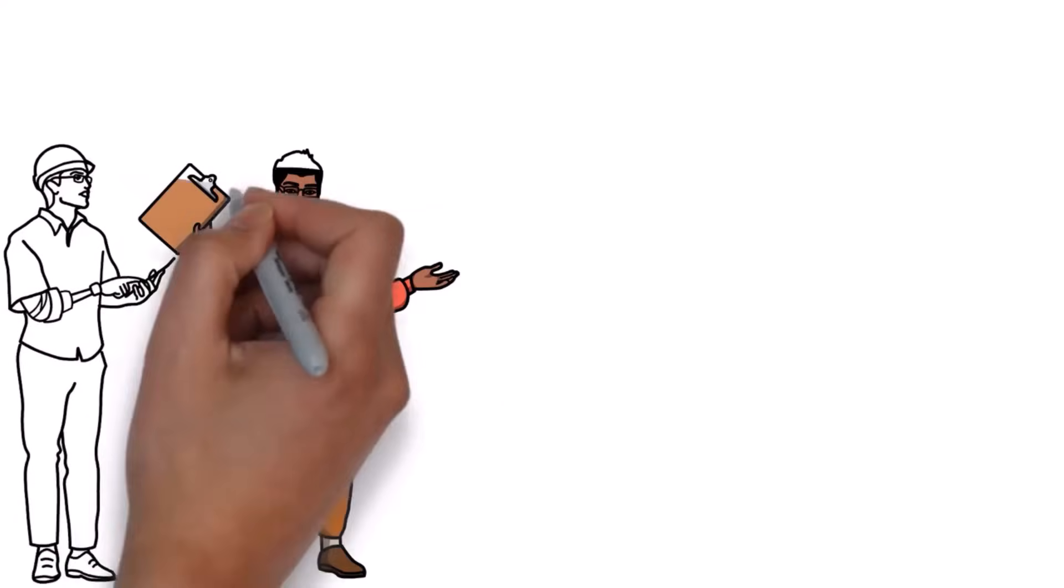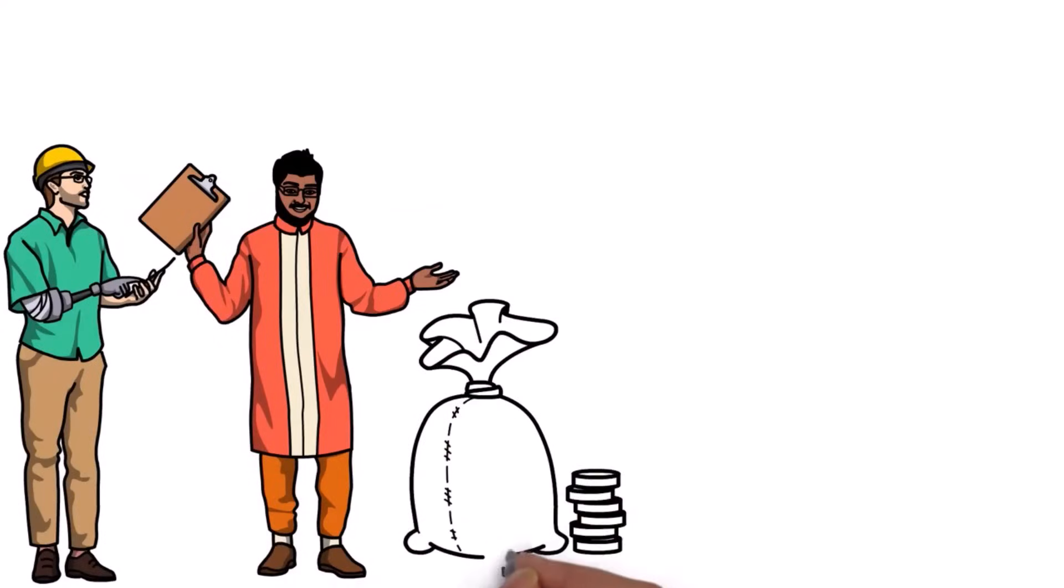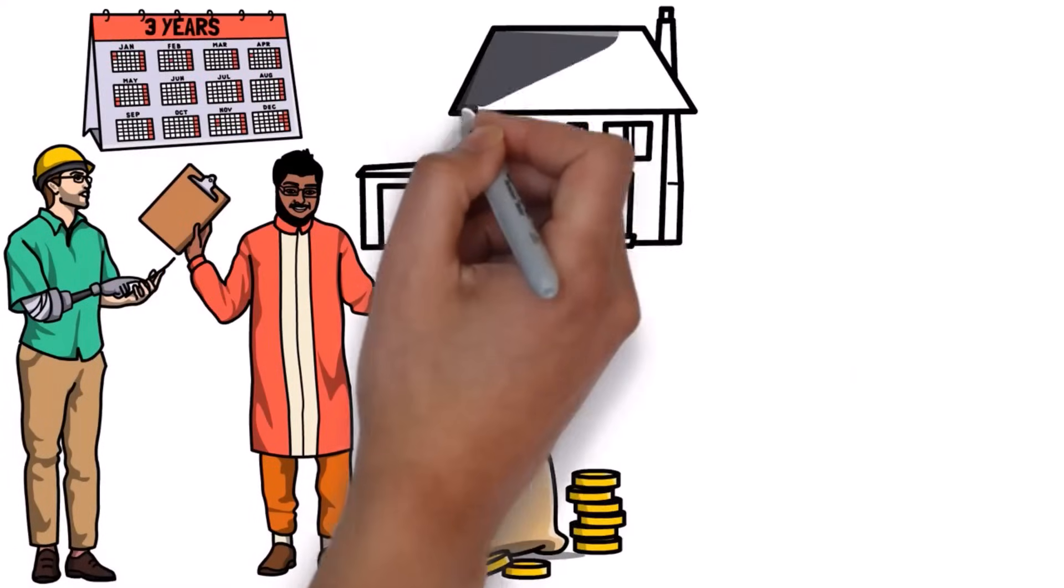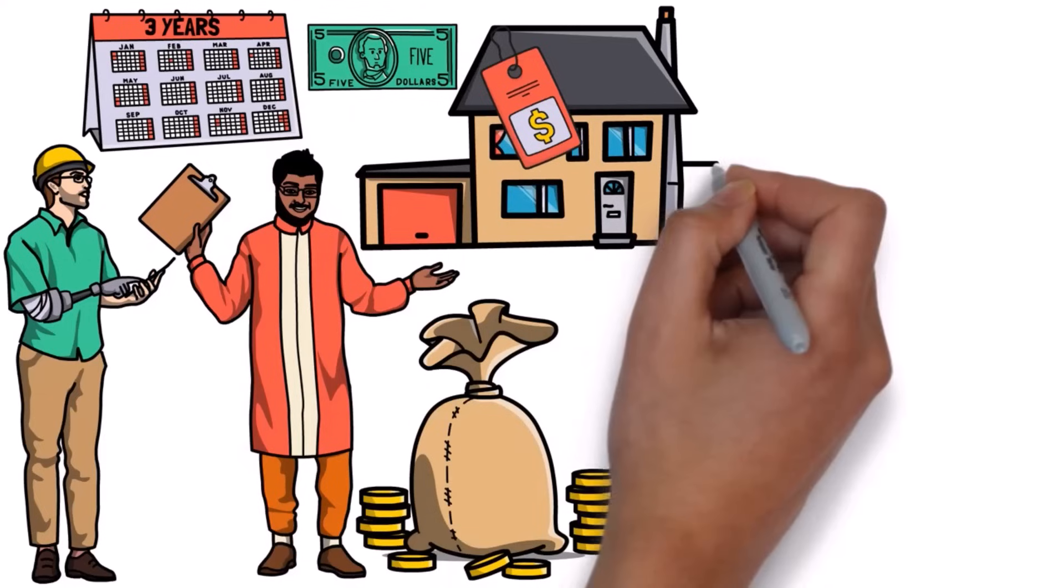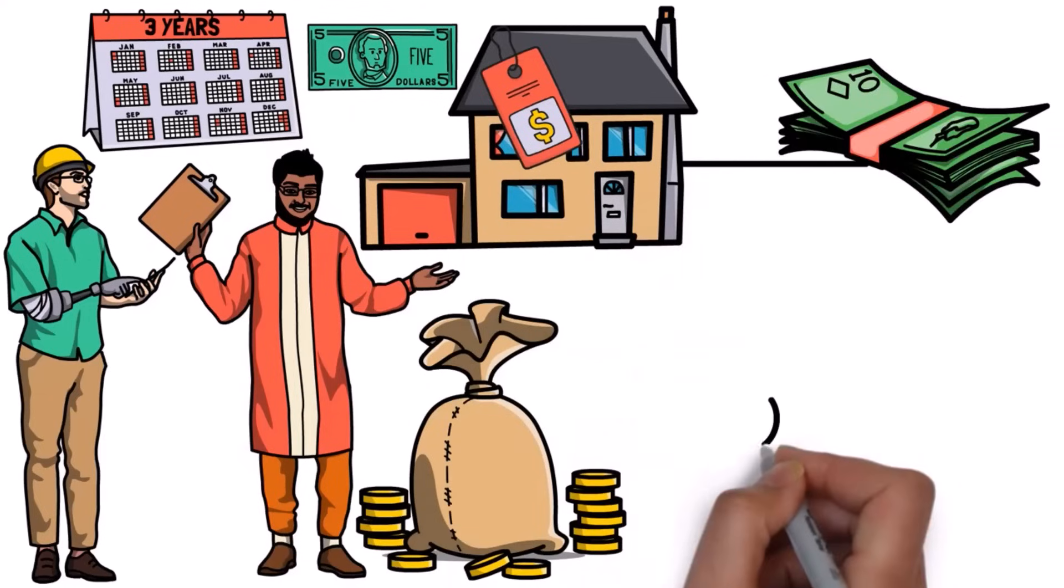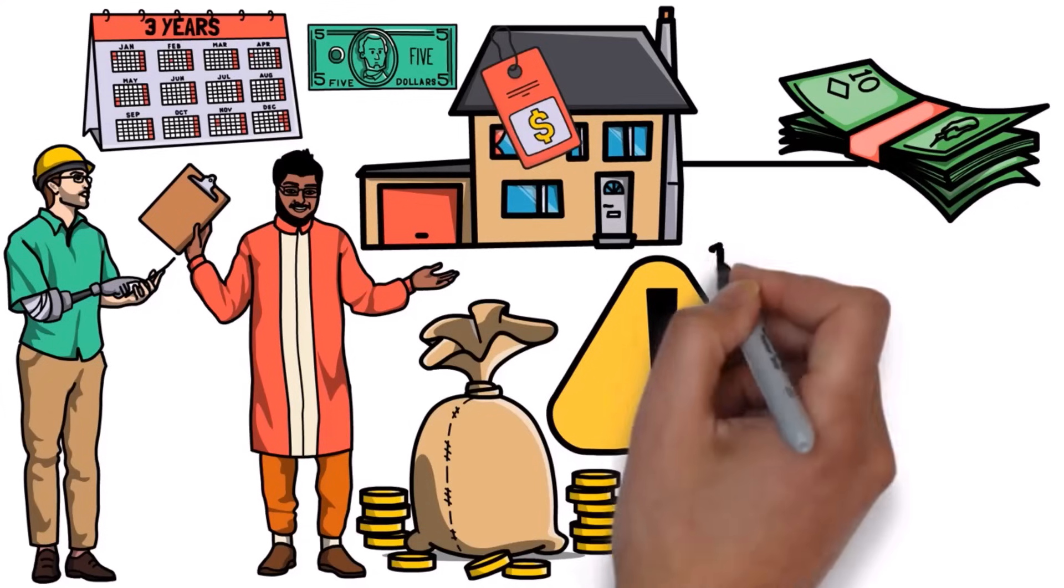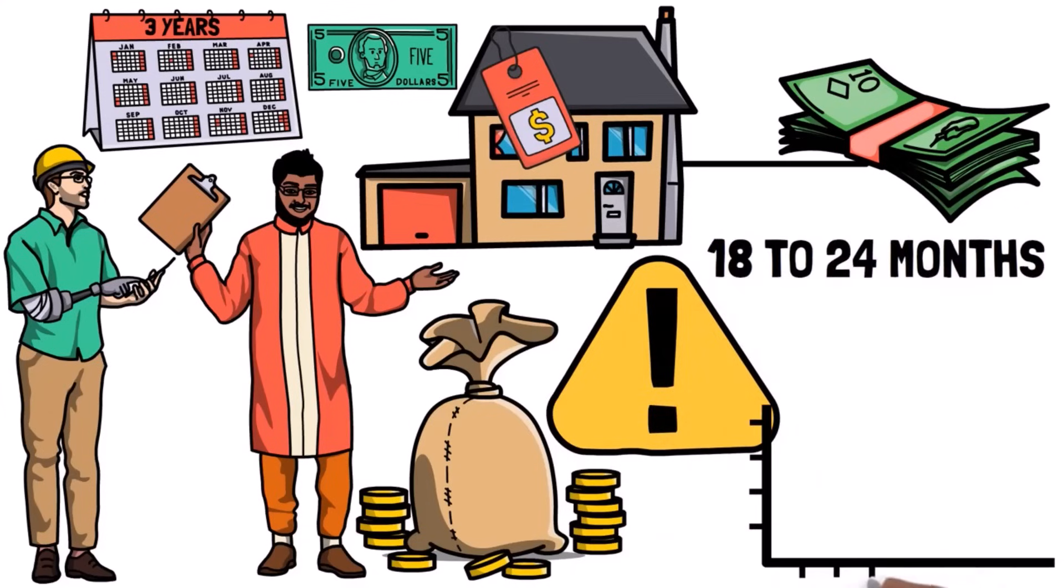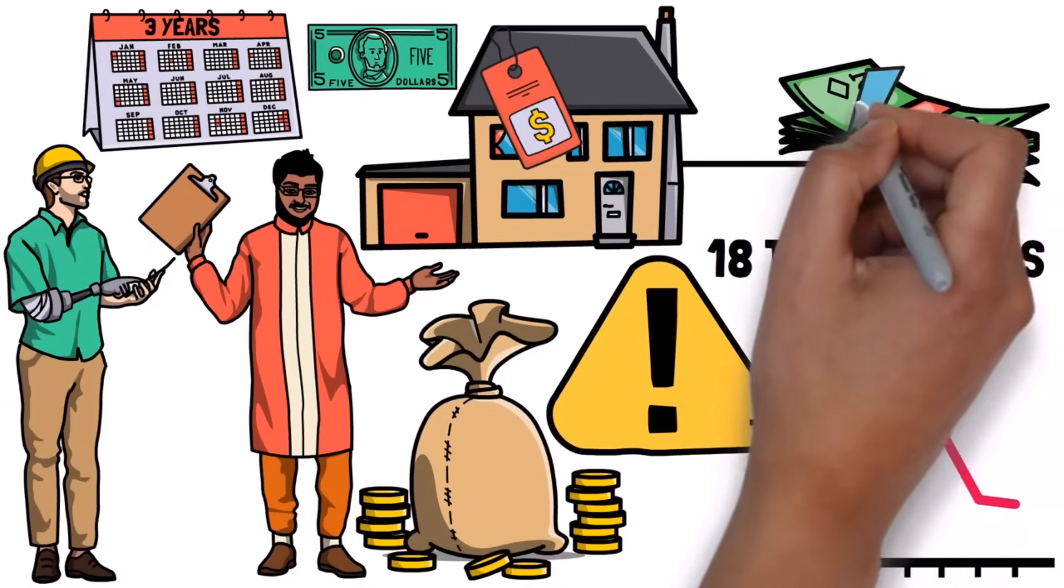I think builders are worried because they had to spend more on labor and materials in the last three years, and now they have to sell these homes when interest rates are high. This means they might have to sell them for less than they cost to build, which hurts their profits. So in the next 18 to 24 months, builders might face financial challenges because they have to sell these expensive homes at lower prices.